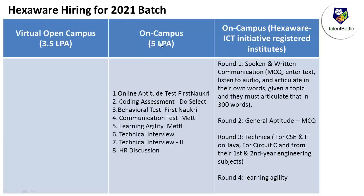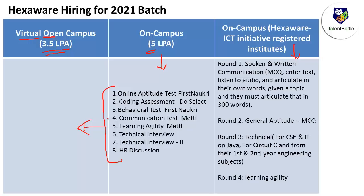One important point: the on-campus process is offering around 5 lakhs per annum, while the virtual open campus is offering around 3.5 lakhs per annum. In our last video about Hexaware, we clearly mentioned the pattern was for the 2020 batch. We had not updated it because we were still not clear about the virtual open campus pattern — this pattern is specifically for on-campus institutes registered under the Hexaware ICT Academy initiative, and it may or may not be replicated for the virtual campus drive.